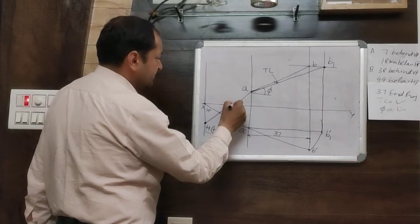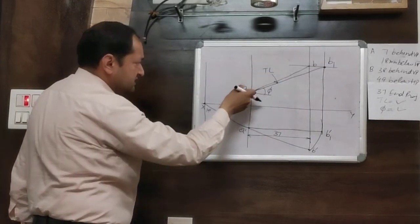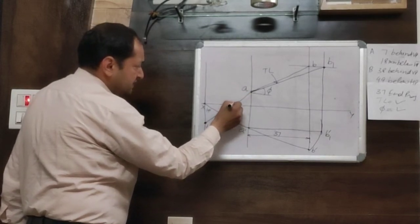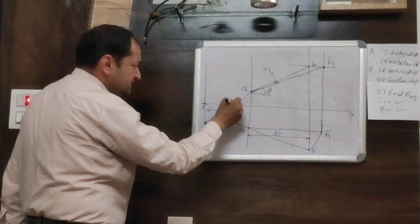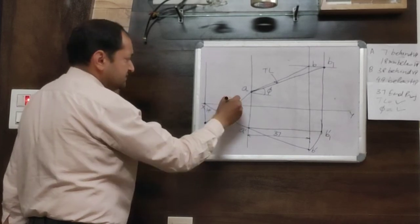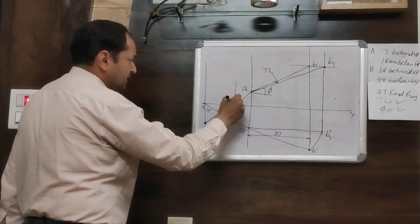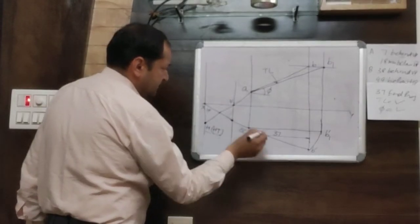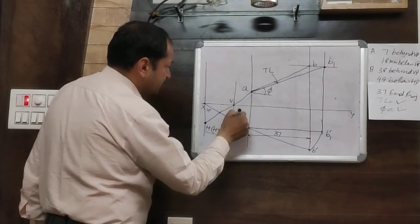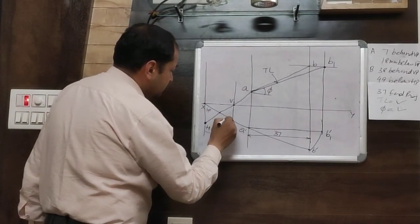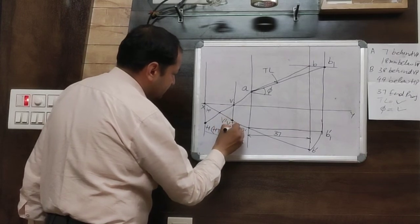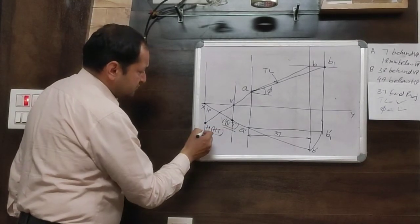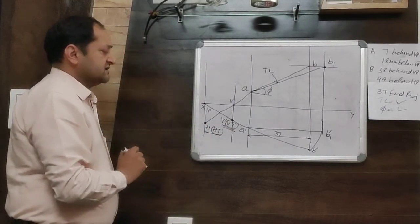Next, find the vertical trace. For the vertical trace, produce the top view until it meets the XY line — that point is named V. Draw a perpendicular line at point V. Then produce the front view until it meets this vertical line at V — that point is called V dash, which is the vertical trace. So these are the two traces: horizontal trace H and vertical trace V.